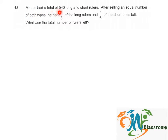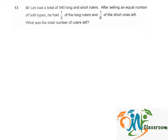Mr. Lim had a total of 540 long and short rulers. After selling an equal number of both types, he had one third of the long rulers and one sixth of the short rulers left. What was the total number of rulers left?